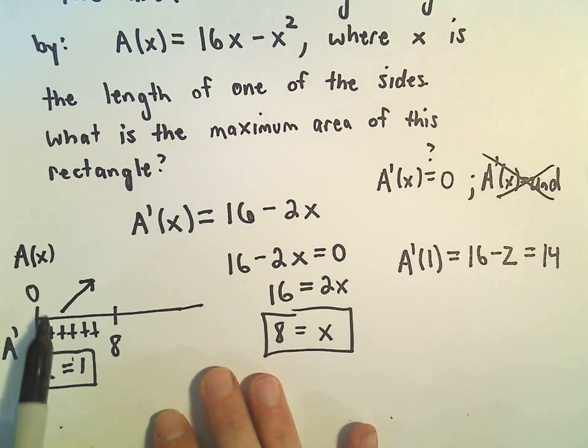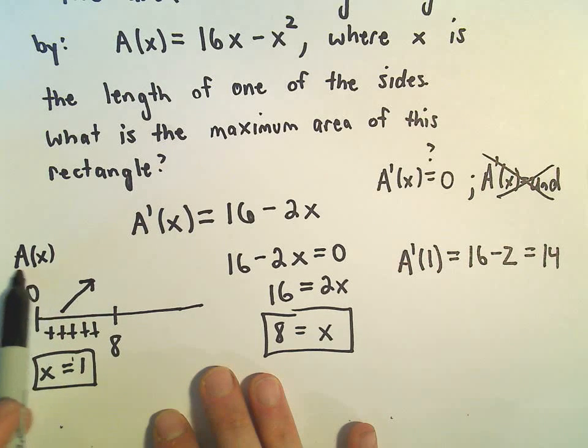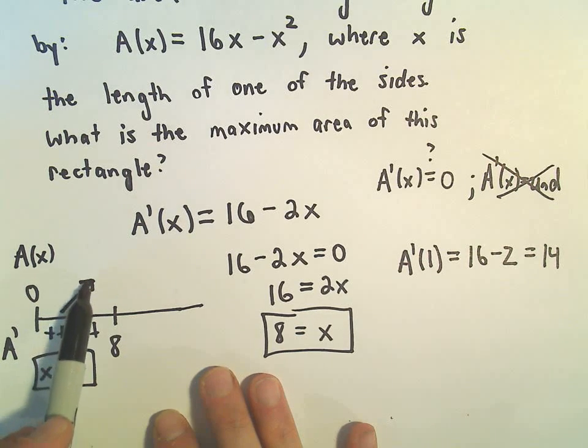So it says as x increases, 1, 2, 3, 4, 5, 6, 7, up to 8, it says the area of the original rectangle is getting bigger, bigger, bigger.